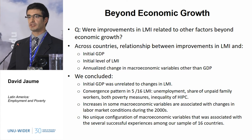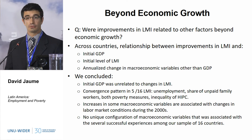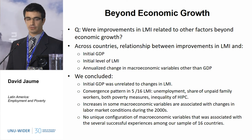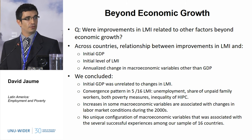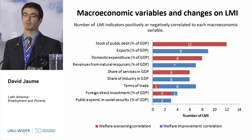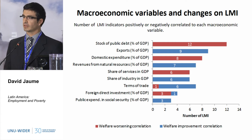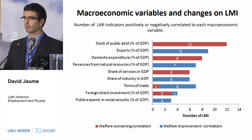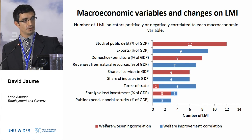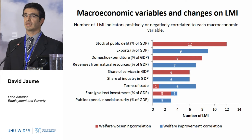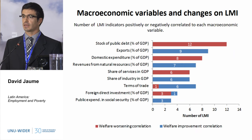Finally, we look at other macroeconomic variables to see if changes in these variables may be related to improvements in labour market indicators. We found some macroeconomic variables associated with improvements in labour market indicators, but we don't find a unique configuration of macroeconomic variables that could explain our findings. What we did was take each of these macroeconomic variables and estimate the correlation between changes in these variables and changes in each one of the labour market indicators. In this table, I show the number of labour market indicators for which we found a tight correlation and the direction of that correlation. For example, increases in the stock of public debt are related to worsening in 12 of the labour market indicators.